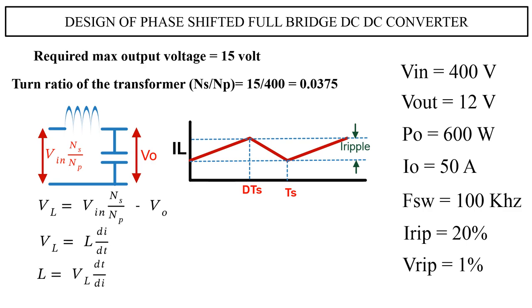Looking at the current waveform, we can substitute the values for dI and dt. Then inductance becomes L equals VL times DTS divided by Iripple. From this equation we can calculate VL.